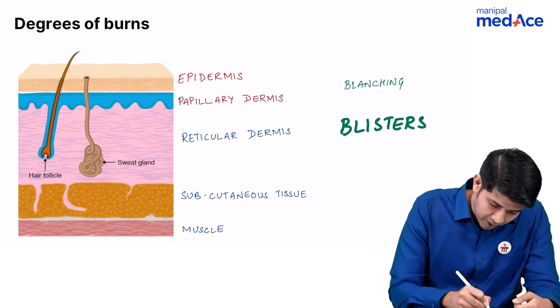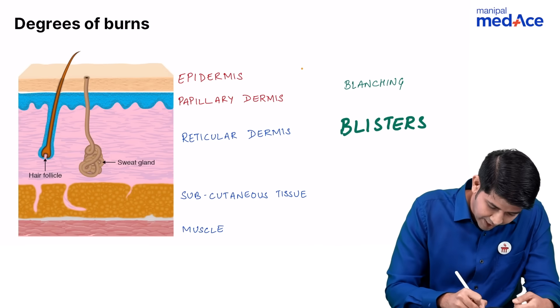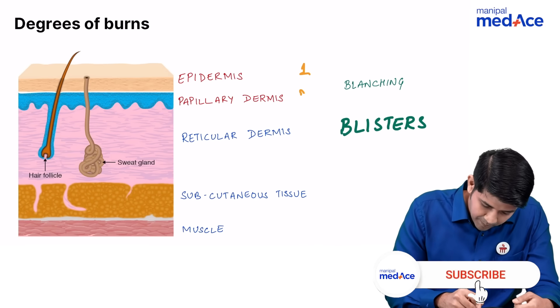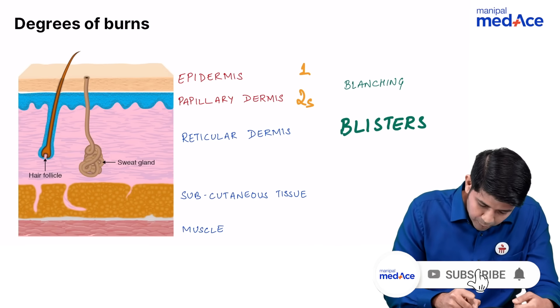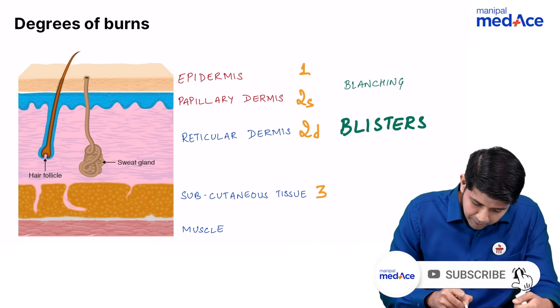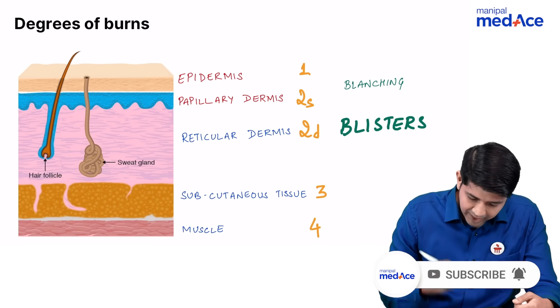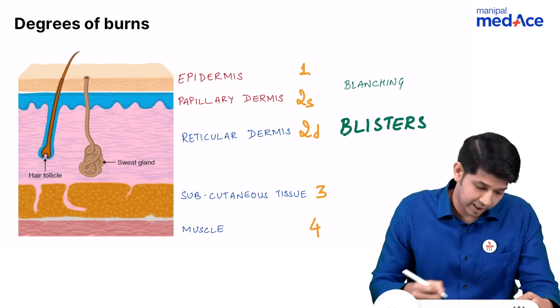So correspondingly, they are called as first degree, second degree superficial, second degree deep, third degree, and fourth degree burns.